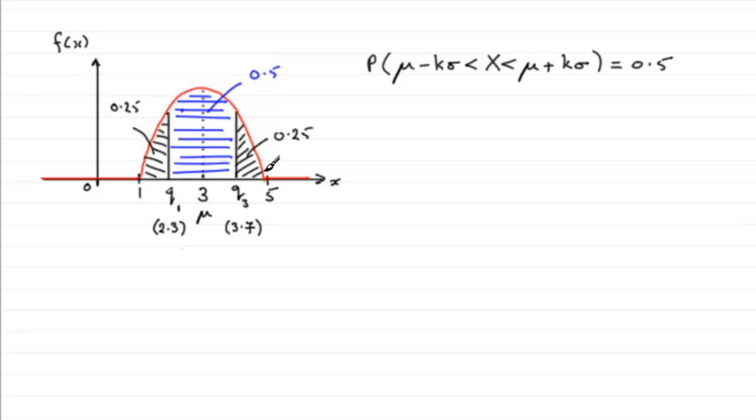So there's two ways that we can find out what k is. We can say that this value is Q1, and mu plus k sigma, this value, is Q3, the 3.7. So, either way, just equate these two values to our quartiles, and then solve it for k.